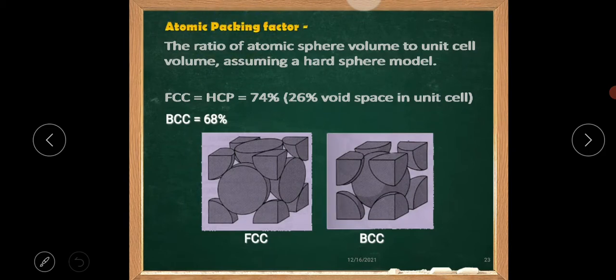The ratio of atomic sphere volume to unit cell volume, assuming a hard sphere model. FCC equals HCP equals 74%, 26% void space in unit cell. BCC equals 68%. This is FCC structure and this is BCC structure.